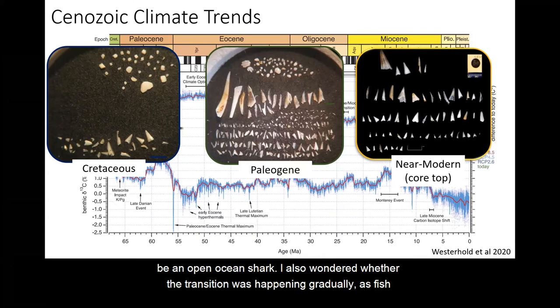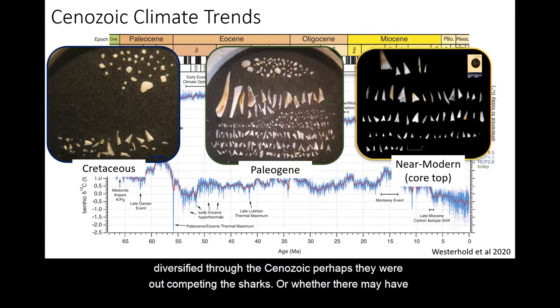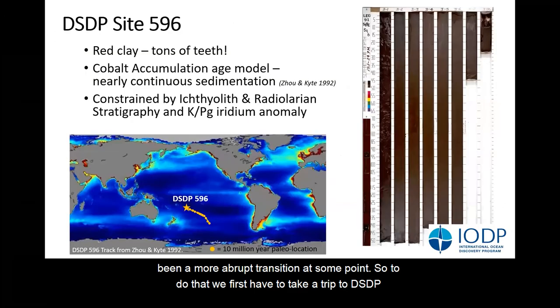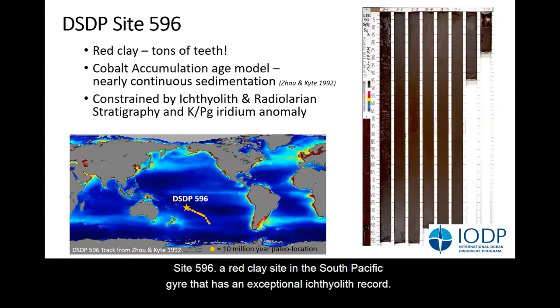So I wanted to figure out what was happening to the sharks, and perhaps what made the Miocene such a tough time to be an open ocean shark. I also wondered whether the transition was happening gradually as fish diversified through the Cenozoic — perhaps they were out-competing the sharks — or whether there may have been a more abrupt transition at some point. So to do that, we first have to take a trip to DSDP site 596.